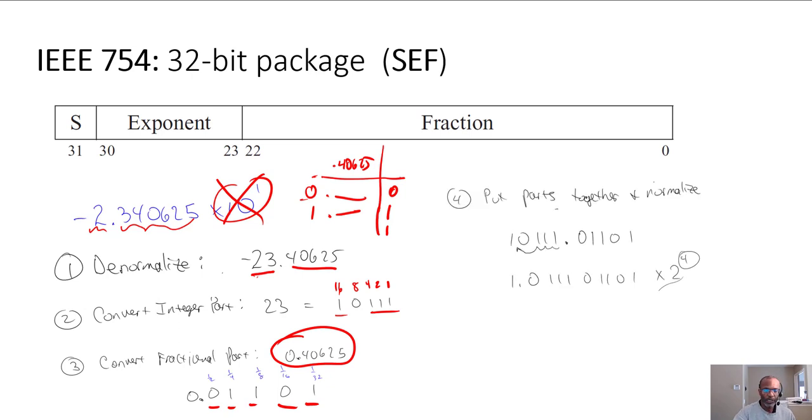So now we take our 23 and we take our fractional part, and those two together, we're going to normalize. By normalize I mean we're going to move this value one, two, three, four decimal places. So it'll be 1.something and then the fractional part times 2 to the fourth. This information here is going to be used to populate our 32 bit value.